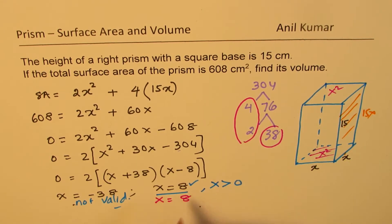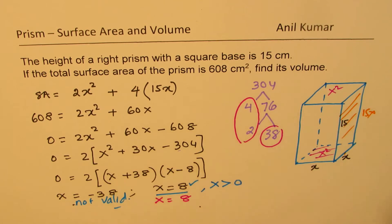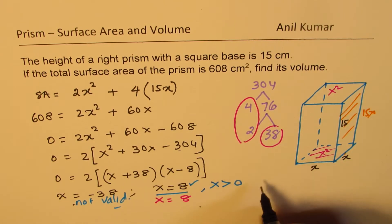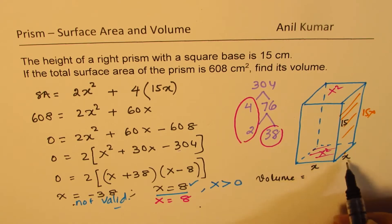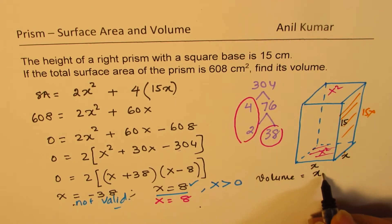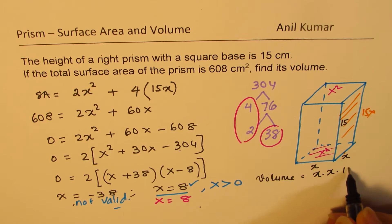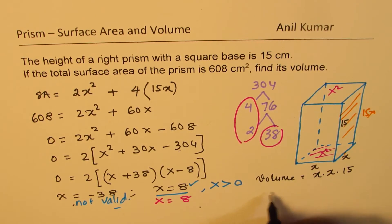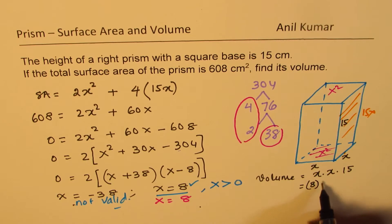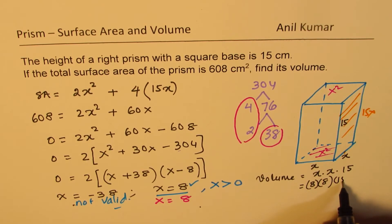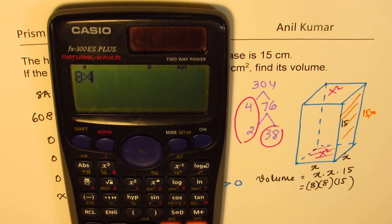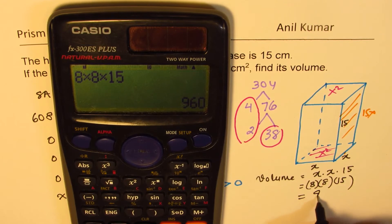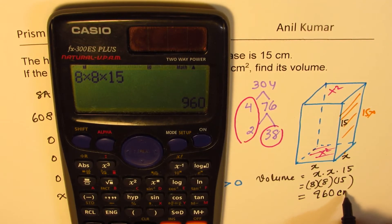Now, the question is find its volume. So what is the volume? Volume will be equal to length times width times height. So it is x times x times 15. Now, since x is 8, so the volume is 8 times 8 times 15. 64 times 15. Let's find the answer. 8 times 8 times 15 is equal to 960 centimeter cube.